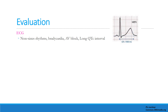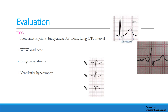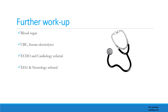ECG is essential and must be evaluated for non-sinus rhythms, bradycardia, AV block, and prolonged QTc interval. QT interval is measured from the start of the Q wave to the end of the T wave; QTc is calculated by dividing QT interval by the square root of the RR interval. WPW syndrome shows a typical delta wave — a slurring in the initial part of the QRS complex. Also look for Brugada syndrome and strain patterns seen in ventricular hypertrophy. Further workup may include blood glucose, complete blood count, serum electrolytes, echocardiogram, and cardiology referral if cardiac syncope is suspected, plus EEG and neurology referral if required.